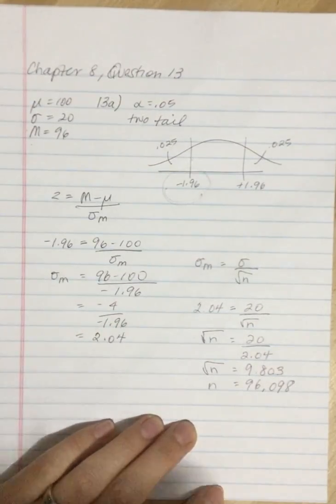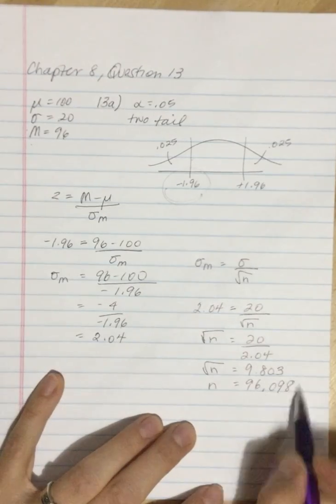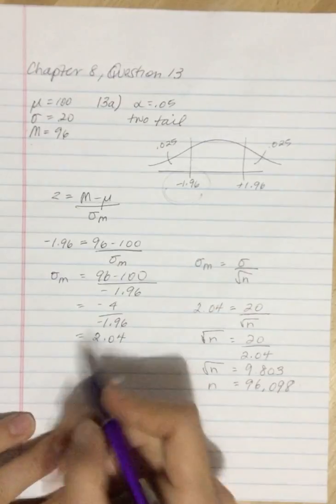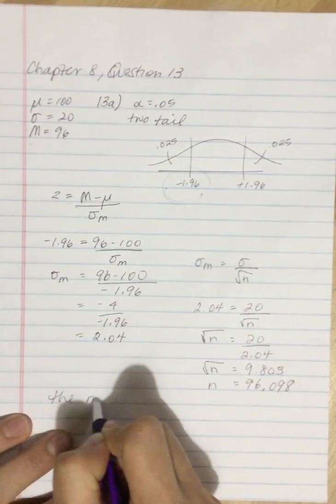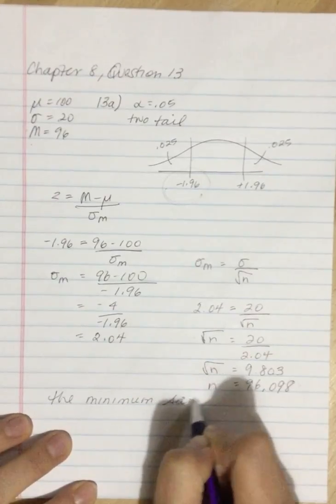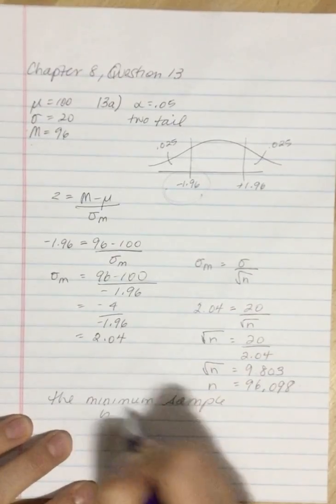That means that the minimum sample size that we need - we need more than 96. 96 is not going to cut it. So the minimum sample is 97.